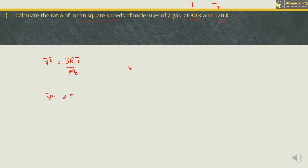Taking the ratio: V₁² / V₂² = T₁ / T₂. T₁ is given as 30 Kelvin and T₂ is 120 Kelvin, so this gives us 1/4. The ratio we got is 1:4. Let us go ahead to the next sum.